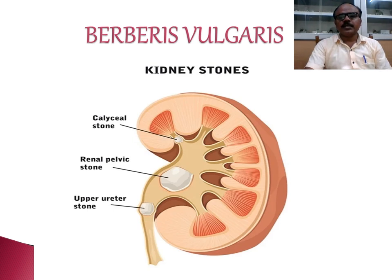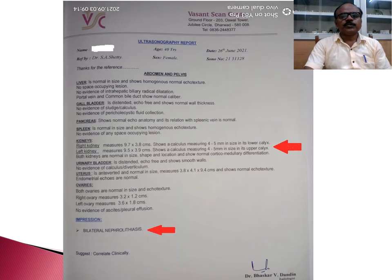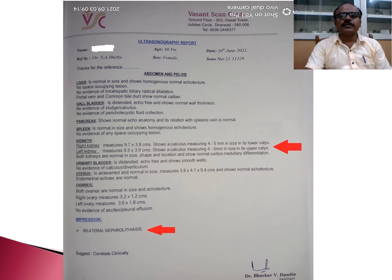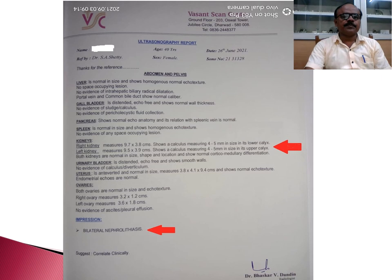Berberis Vulgaris is a remedy to be thought about in renal calculi. Here is a case treated with Berberis Vulgaris mother tincture. On the ultrasonography report of a lady aged 40 years, the right kidney showed a calculus measuring 4 to 5 mm in its lower calyx, and the left kidney also showed a calculus measuring 4 to 5 mm in its upper calyx. This lady had the typical pain of Berberis Vulgaris — radiating in different directions — and the investigation was done on 26th June 2021. She came in August having tried painkillers and Ayurvedic treatment with not much relief. With the characteristic colic pain, she was given Berberis Vulgaris mother tincture, eight drops before food three times a day, and within two days the pain disappeared.